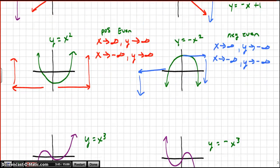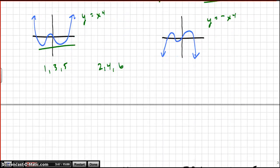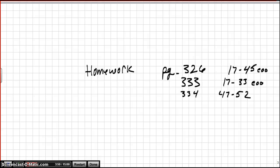So keep that in mind when you're doing your homework. Your homework is right here. 326, number 17 through 45, every other odd. 333, number 17 through 33, every other odd. And then page 334, 47 through 52, all of them. Remember, if you have any questions, you can email me, you can text me. I'd be more than happy to reply. Sorry I couldn't be there. Hope everybody has a great weekend.